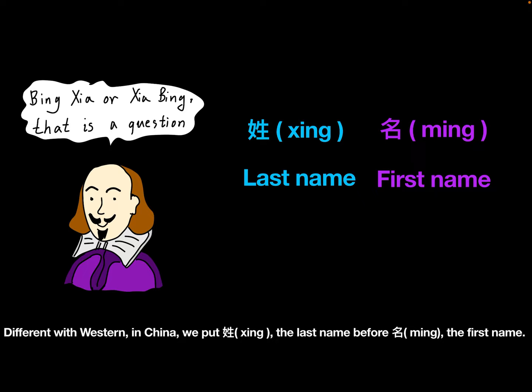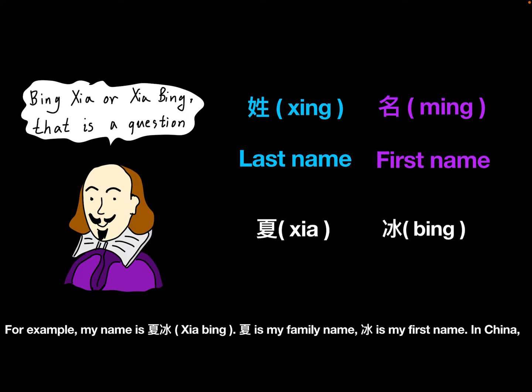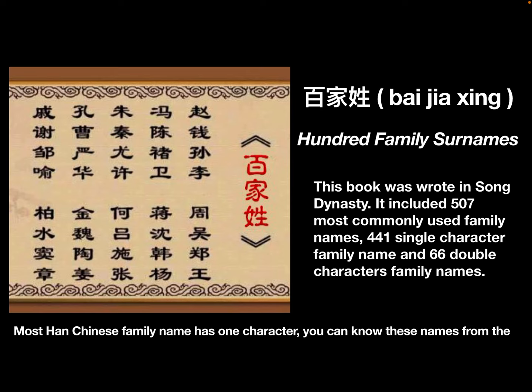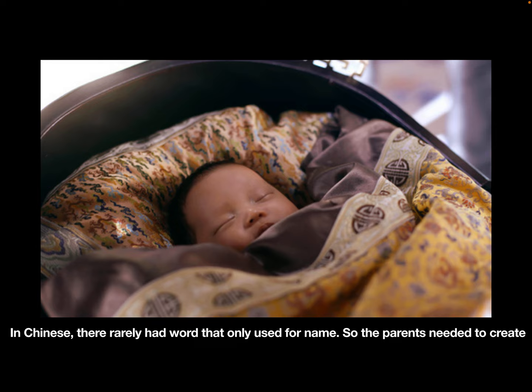Different from Western naming, in China we put Xin, the last name, before Ming, the first name. For example, my name is Xia Bing. Xia is my family name and Bing is my first name. In China, most Han Chinese family names have one character. You can know those names from the book called Bai Jiaxin.